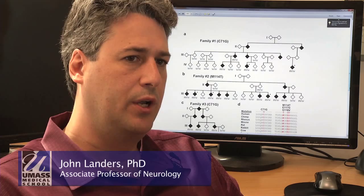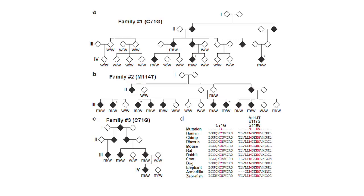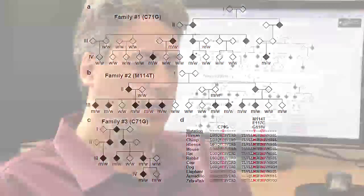Our research was focused on finding a new gene that causes familial ALS. To do this, we had two families with ALS. We took two members from each family and sequenced all the genes in their entire genome.